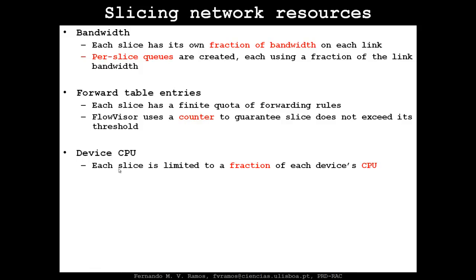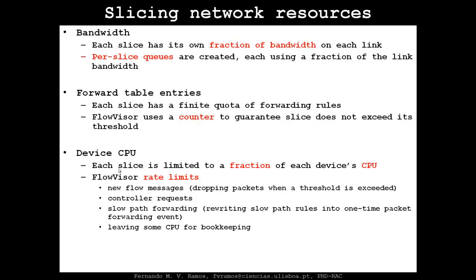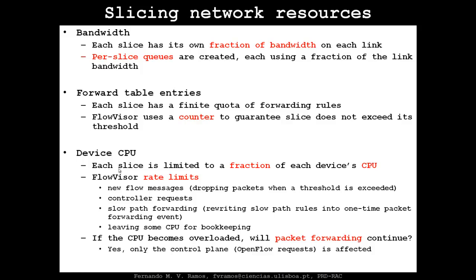FlowVisor also slices the device CPU. Every switch has a CPU to take care of the control plane, and in FlowVisor each slice is limited to a fraction of each device's CPU. FlowVisor rate-limits new flow messages — dropping packets when a threshold is exceeded — and anything that goes to the slow path, that is to the CPU, is also controlled. FlowVisor itself leaves some CPU aside for bookkeeping. If the CPU becomes overloaded, will packet forwarding continue? Of course — only the control plane OpenFlow requests are affected, so the data plane continues unaltered. It may become a problem but not a very serious one if it happens only briefly.